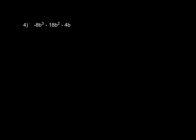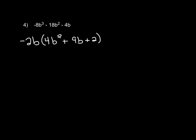Let's take a look at one last one together, number 4 from your packet. First thing you want to say to yourself is: can I factor out a greatest common factor? Actually, yes, in this case we can. We could factor out a negative 2b — I'm choosing negative because our leading term is negative. And when you do, it's going to leave you with positive 4b squared plus 9b plus 2 in the parentheses. So let me bring down the negative 2b.